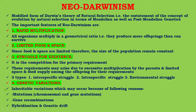Fourth is genetic variations. Genetic variations are inheritable variations which may occur because of the following reasons: mutation — that is chromosomal and gene mutations — gene recombination, hybridization, and genetic drift.